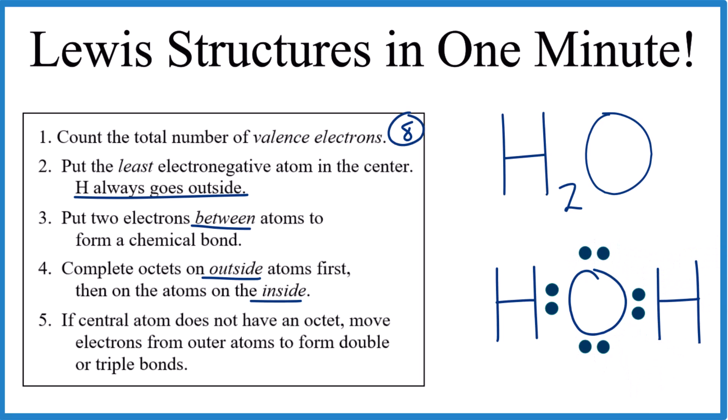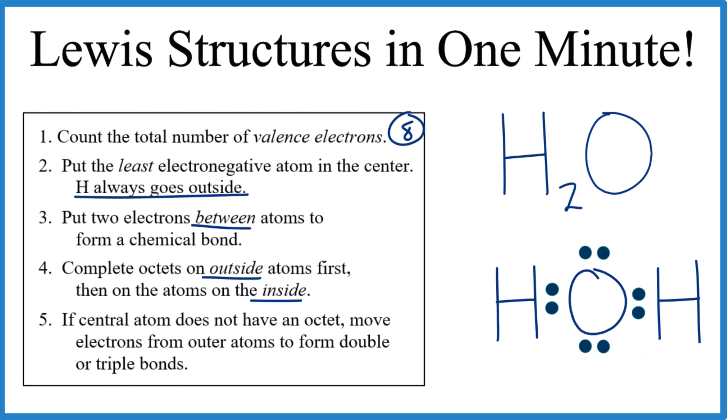We've used eight valence electrons. Hydrogens both have two. Oxygen has eight. That's an octet. We're done. So pause. Give this one a try.